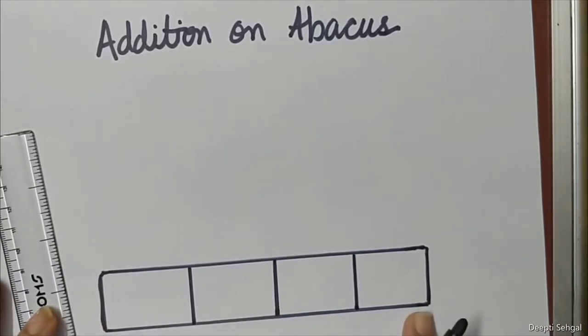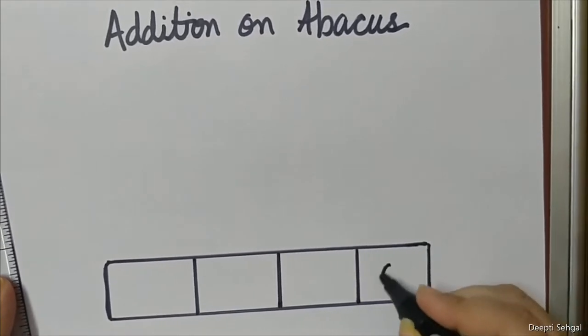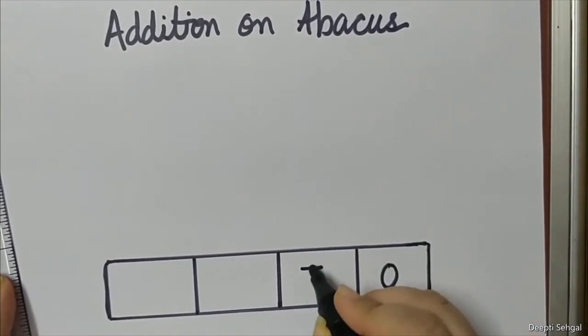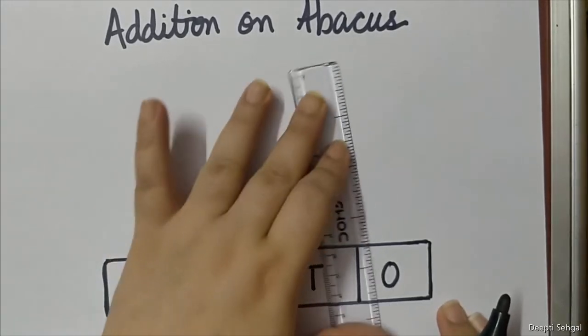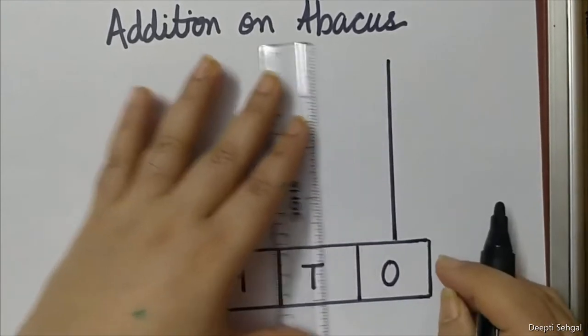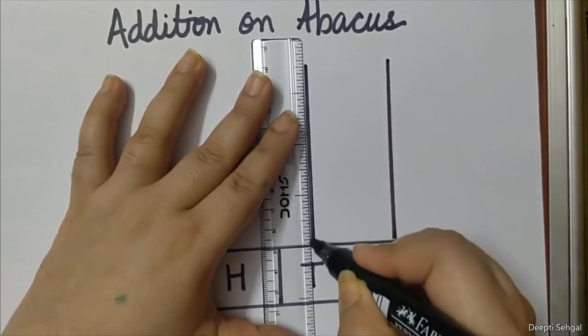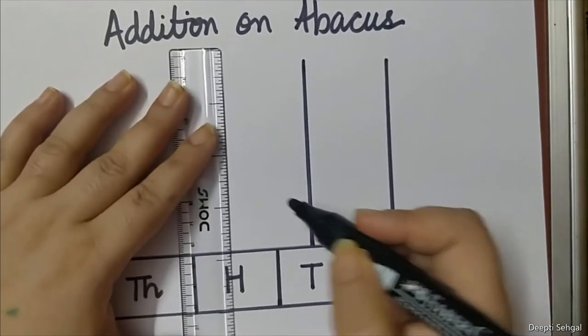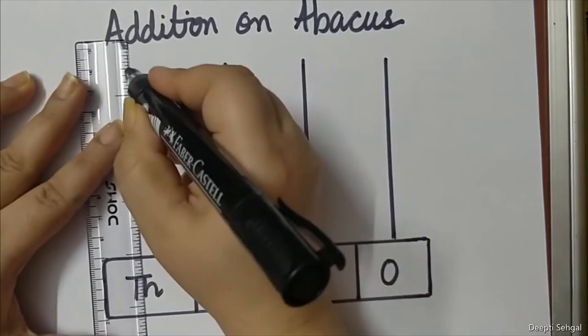So these are my 4 places. This is ones place, this is tens, this is hundreds, and this is thousands. Let me draw the rods of the abacus: ones rod, tens rod, hundreds rod, and thousands rod.